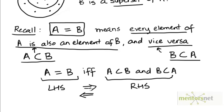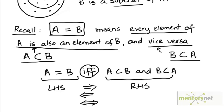So when the implication holds both ways, we say that the left-hand side is true if and only if the right-hand side is true, and we can denote it alternately by this symbol. "If and only if" is a two-way relationship, as indicated by this arrow: the left-hand side implies the right-hand side and the right-hand side implies the left-hand side.